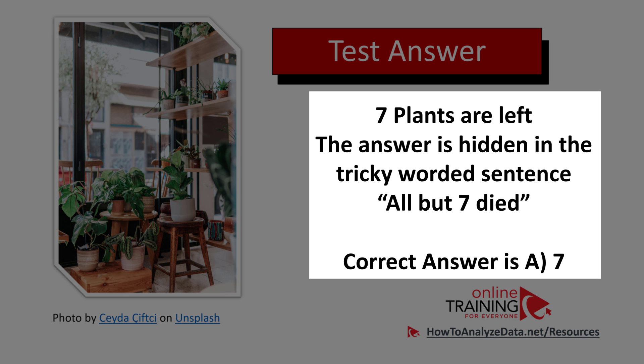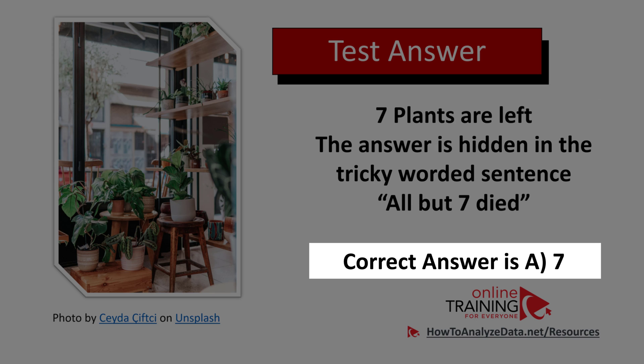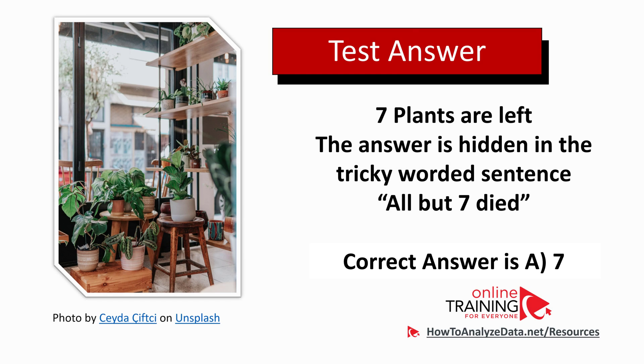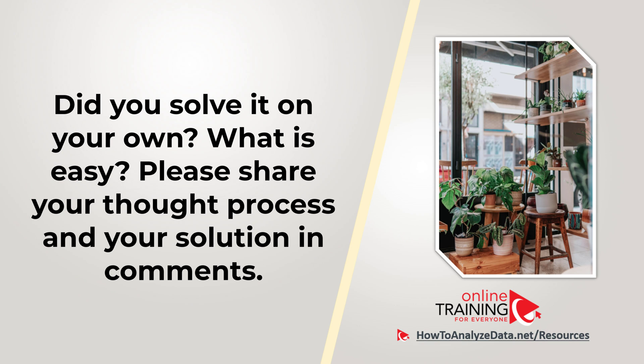I think you heard me correctly. The answer is 7 plants are left. How is it possible? The answer is hidden in the tricky worded sentence: All but 7 died. This is why the correct answer is A. Florist had 57 plants, and all of them but 7 died. That's why the correct answer is A, 7. Hopefully you've nailed this question and now know how to answer similar problems on the test.